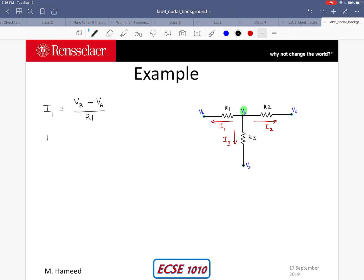Similarly, I can write the current I2 as VB minus VC divided by R2 and then I can also write I3 as